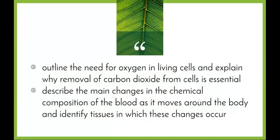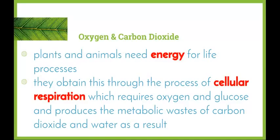So we're going to start by having a look at the two theory dot points. So oxygen and carbon dioxide. As we know, plants and animals need energy for life. Now the way that plants and animals obtain this energy is through the process of cellular respiration. Now cellular respiration takes place in every cell of our body in the mitochondria and it is a process which requires oxygen and glucose and produces the metabolic wastes of carbon dioxide and water as a result.